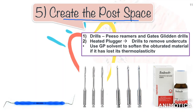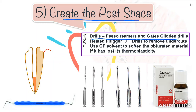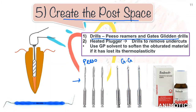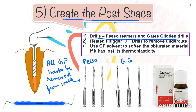Once the length is determined, you will start creating the post space within the obturated tooth. There are essentially two ways: one is using drills like piezo reamers and Gates Glidden drills. These drills are generally quite safe and chances of perforating the canal are minimized as they have non-cutting tips. You can put a stopper on these drills according to the post length already determined. The drill has to be just a size smaller than the canal space. Start with number one drill in the sequence and go on until all the gutta-percha from the canal wall is removed. Do not over-prepare the post space as you will weaken the tooth.